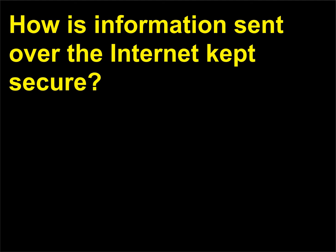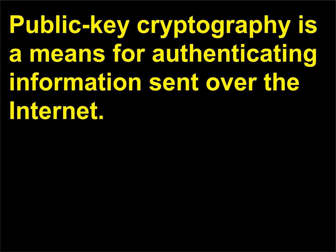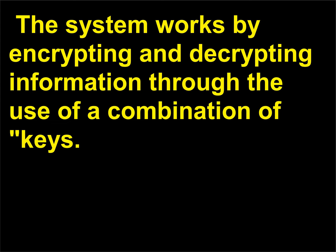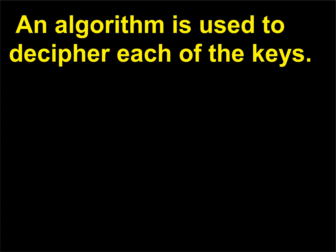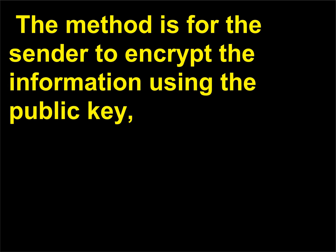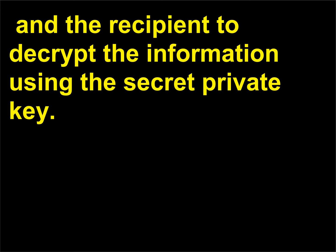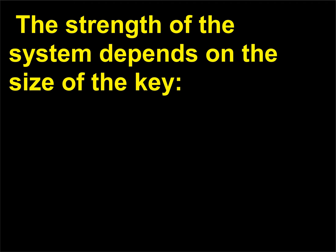How is information sent over the internet kept secure? Public key cryptography is a means for authenticating information sent over the internet. The system works by encrypting and decrypting information through the use of a combination of keys. One key is a published public key; the second is a private key, which is kept secret. An algorithm is used to decipher each of the keys. The method is for the sender to encrypt the information using the public key, and the recipient to decrypt the information using the secret private key.